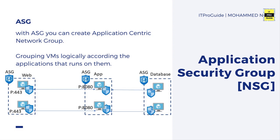Next, we have Application Security Groups — the second and final option when creating a network security group in Azure. Application security groups help you manage the security of virtual machines by grouping them according to the application running on them. For example, you might have a web server at the edge of your data center, an application server, and a database — a classic three-tier architecture. Typically you'd keep two or three web servers, two or three application servers, and two databases for high availability and load balancing.